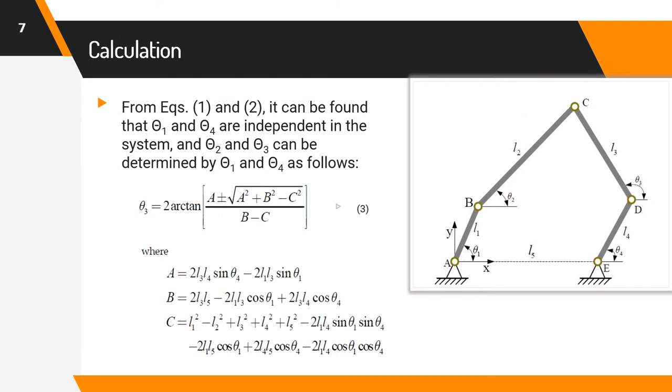From equation 1 and equation 2, it can be found that theta 1 and theta 4 are independent in the system. And theta 2 and theta 3 can be determined by theta 1 and theta 4 as follows. Theta 3 equal to 2 tan inverse A plus minus square root of A square plus B square minus C square divided by B minus C. Where A equal to 2L3L4 sin theta 4 minus 2L1L3 sin theta 1. B equal to 2L3L5 minus 2L1L3 cos theta 1 plus 2L3L4 cos theta 4. C equal to L1 square minus L2 square plus L3 square plus L4 square plus L5 square minus 2L1L4 sin theta 1 sin theta 4 minus 2L1L5 cos theta 1 plus 2L4L5 cos theta 4 minus 2L1L4 cos theta 1 cos theta 4.